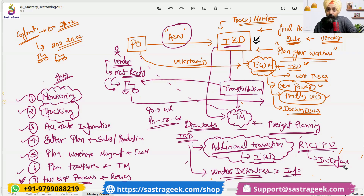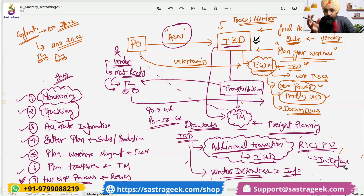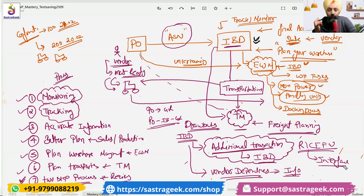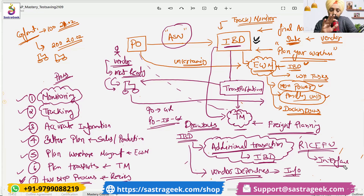Whatever vendor confirmation you need, you can get it through vendor confirmations, not through the IBD. You can create a vendor confirmation, so the IBD is an additional separate document, whereas vendor confirmations can be put under the purchase order itself. Whenever the vendor is confirming — for example by phone — that he can only provide a certain quantity on a certain date, that can be updated by your procurement person in the purchase order.